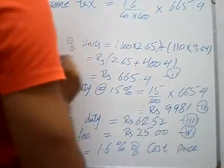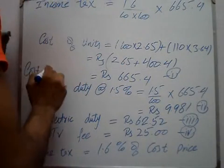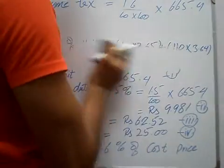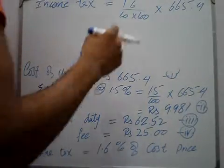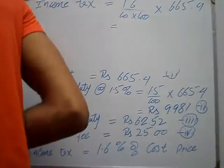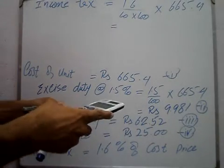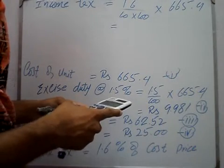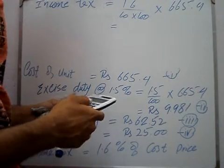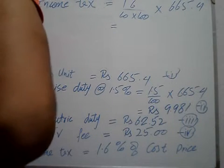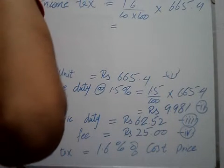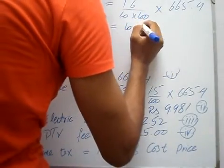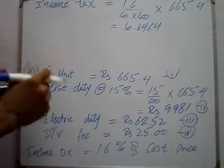Cost is 665.4. We will put it here: 1.6 multiply by 665.4 divided by 100 — or divided by 1000 — gives 10.6464. So income tax = RS 10.6464.